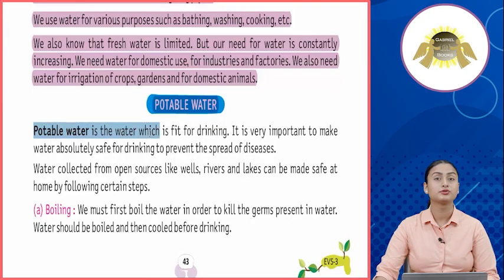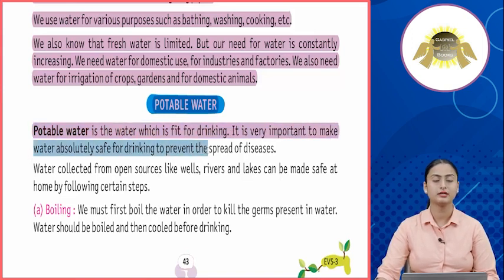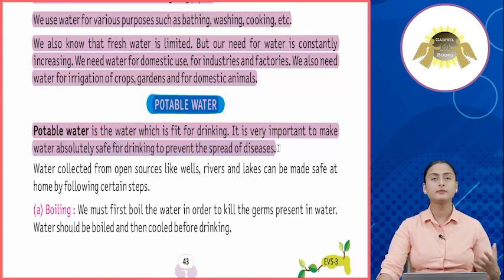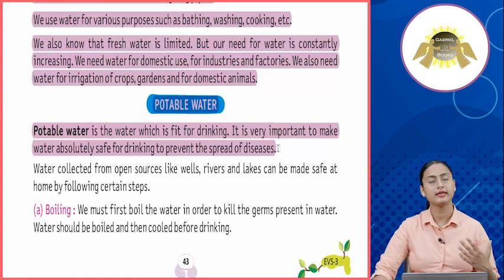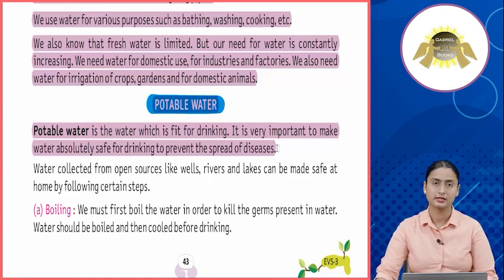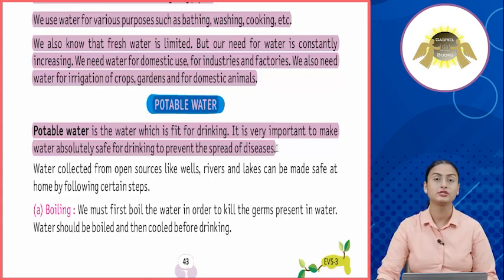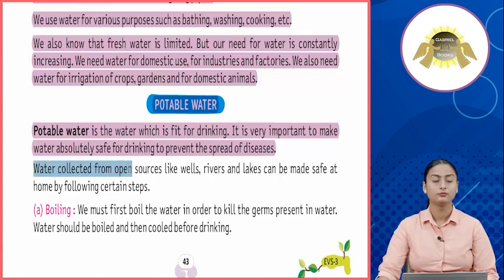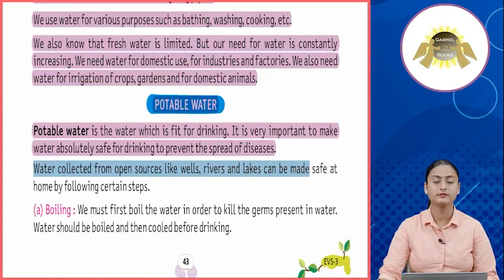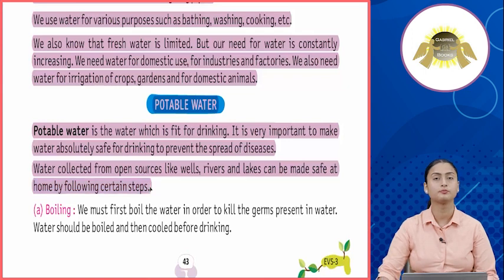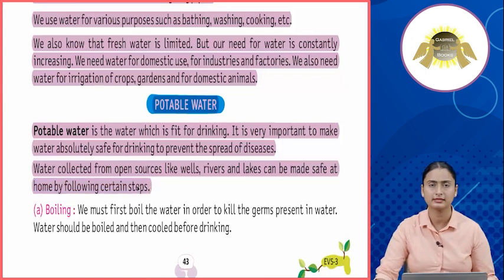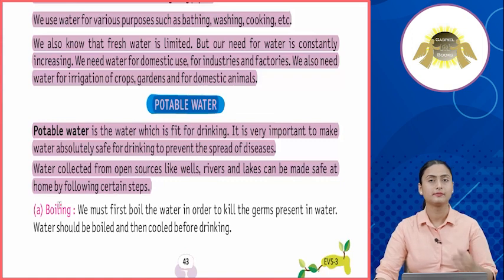Potable water is the water which is fit for drinking. It is very important to make water absolutely safe for drinking to prevent the spread of diseases. Potable water wo paani hota hai jise hum pee sakte hain. Saaf suthara paani peena important hota hai jisse aapko diseases na hon aur aapki body healthy rahe. Water collected from open sources like wells, rivers and lakes can be made safe at home by following certain steps.